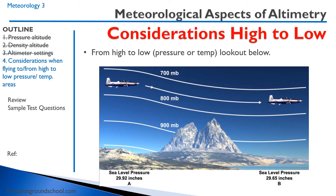This concept comes up often, and there's a mnemonic to remember it: from high to low, look out below. This describes what happens when we go from a high-pressure or high-temperature region to a low-pressure or low-temperature region. Looking at this picture, we have sea level pressure of 29.92 inches on the left, and on the right, sea level pressure of 29.65 inches. If we continue flying with our altimeter set at 29.92 — approximately 750 millibars — as that sea level pressure decreases, the height at which the pressure remains the same will decrease. That means we'll end up clearing those mountains with less altitude than we had anticipated.